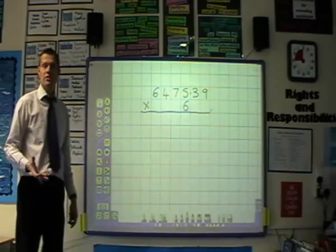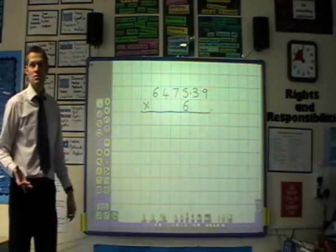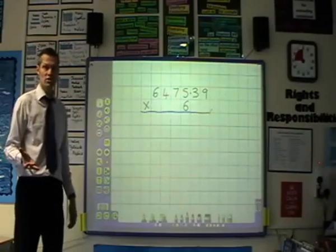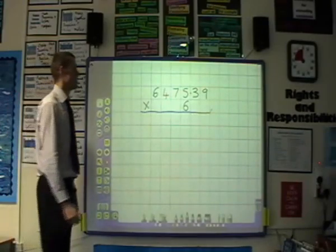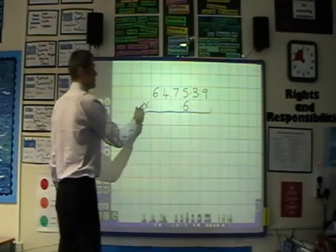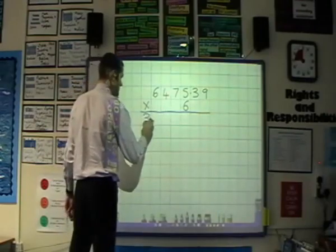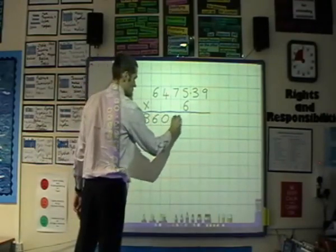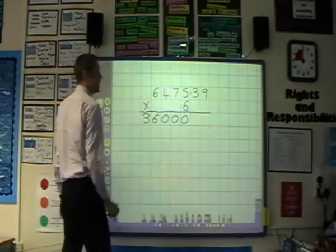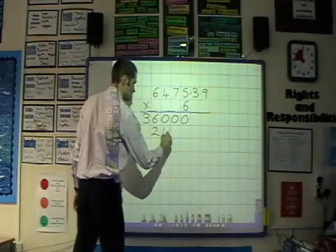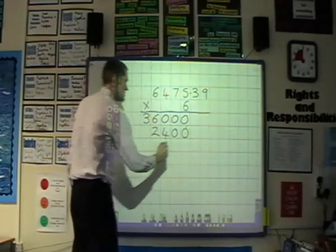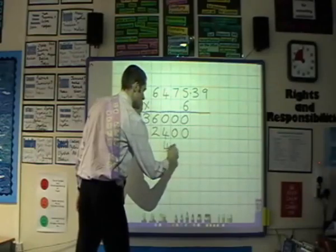Here is an example of a calculation with decimals in it for the most able or oldest children. So 6 times 6,000 is 36,000, 6 times 400 is 2400, 6 times 70 is 420.